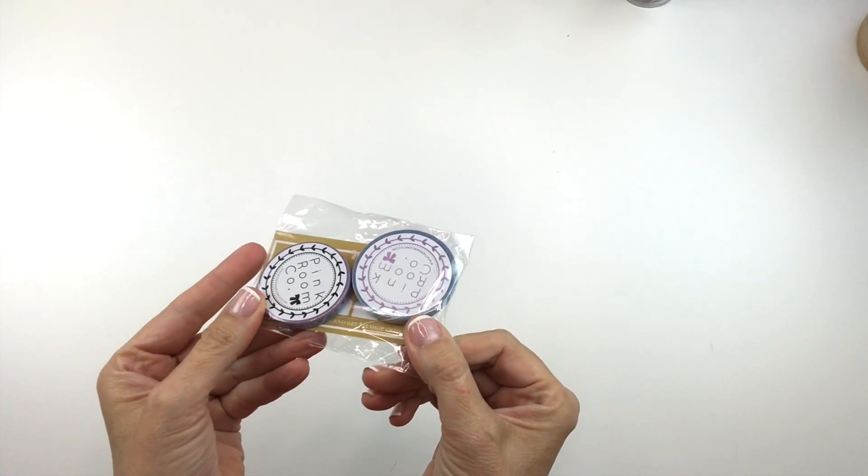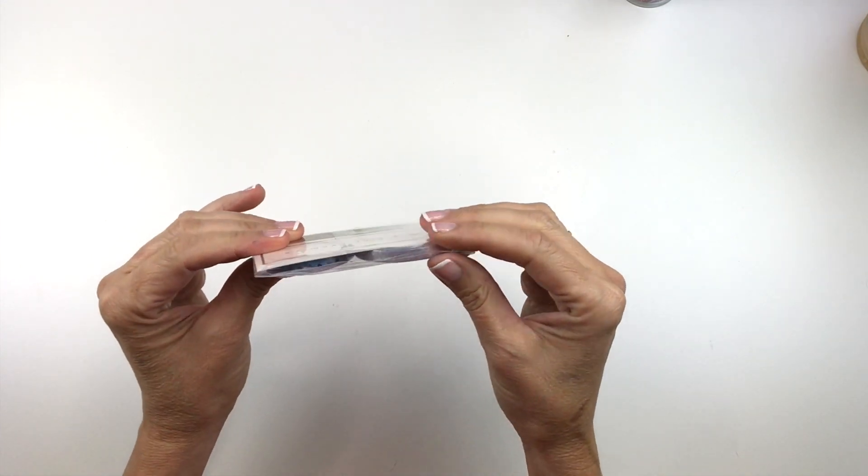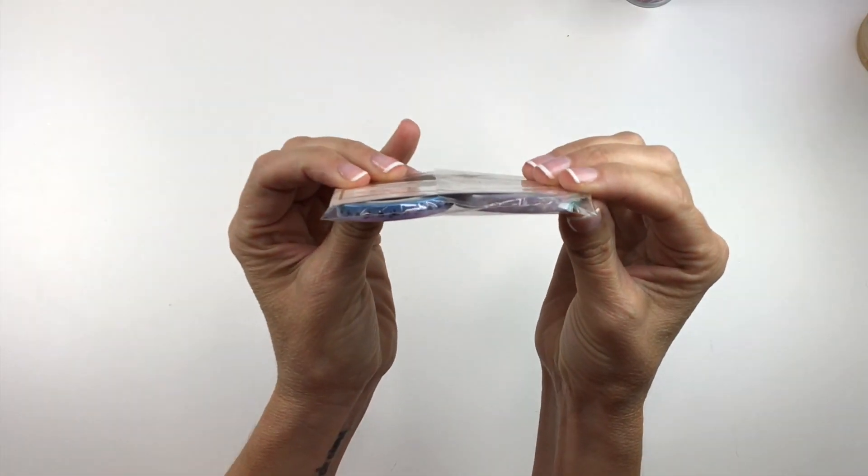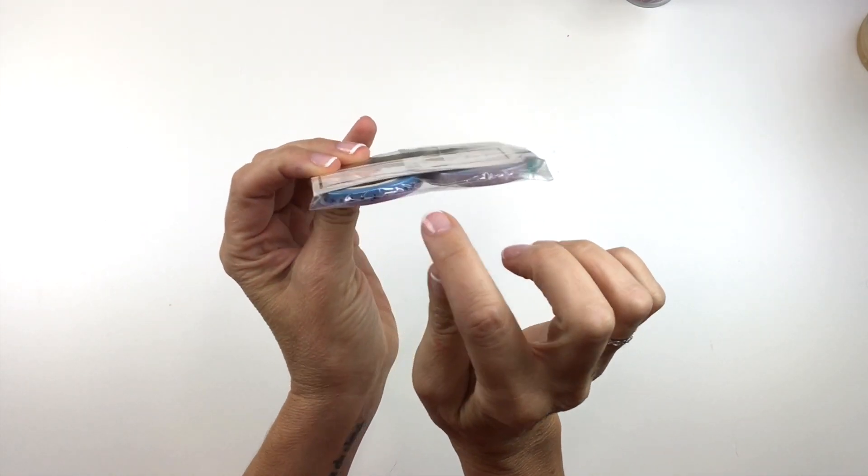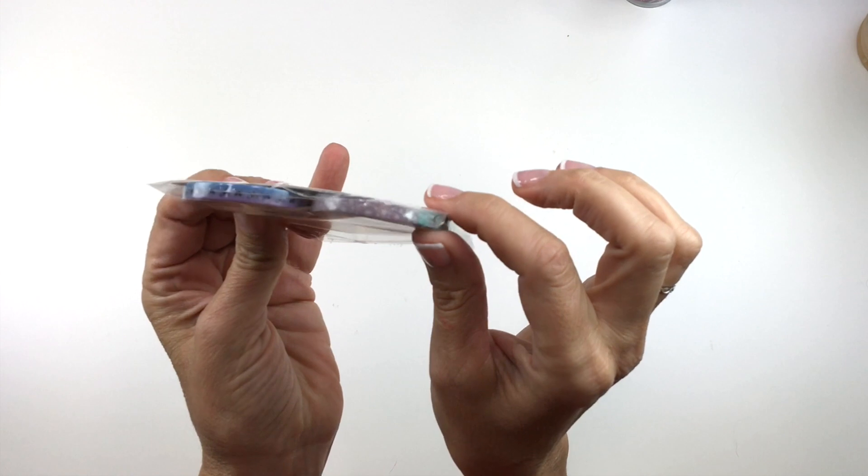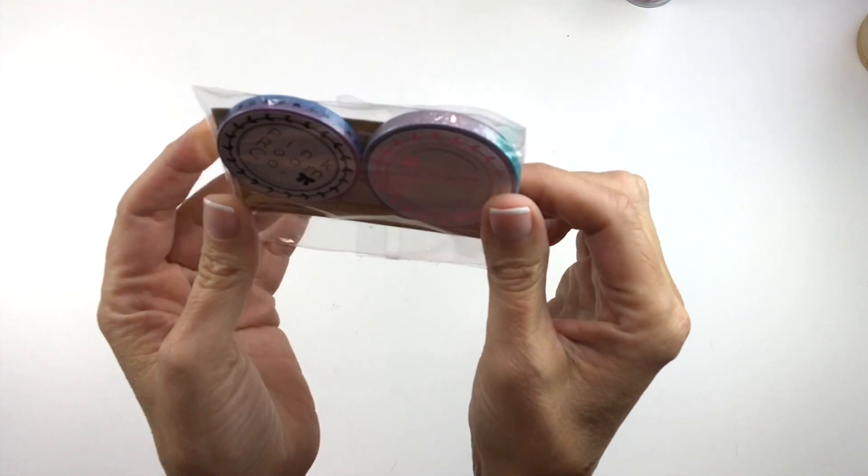And this washi tape from Pink Room Company. I don't know if you can see that. It's really cute. It's like kind of like an ombre purple to blue and then this is like stars I think. Yeah it's really pretty.